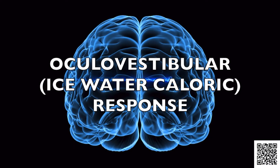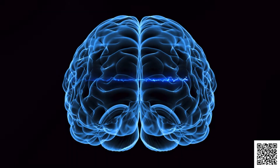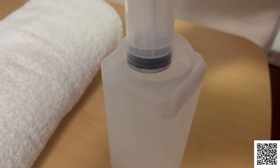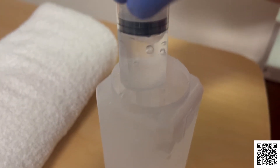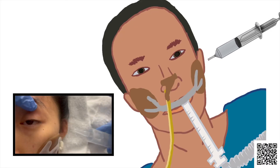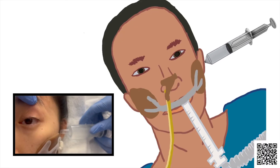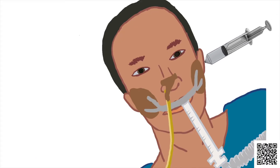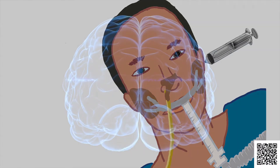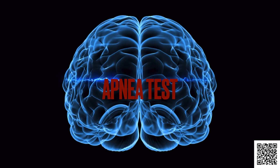Evaluate for ocular vestibular, or ice water caloric response: the provider irrigates the outer part of the patient's ear with ice-cold water for a couple of minutes. This will cause the eyes to deviate towards the irrigated ear, followed by a jerk movement or nystagmus to the side opposite of the ear being irrigated. But on a brain death patient, the eyes are still.